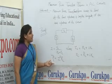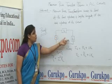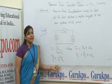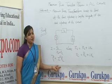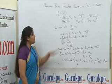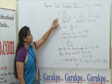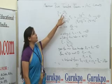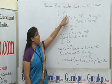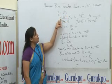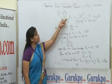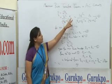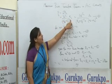The power transferred from source to load will be Pl, which can be written as I²Rl. So Pl equals I²Rl, and substituting the expression for I, Pl equals Vs² upon |Zs + Zl|² multiplied by Rl.